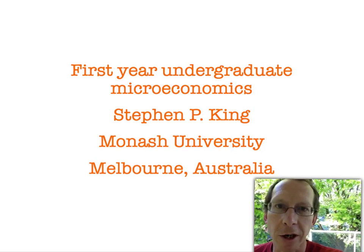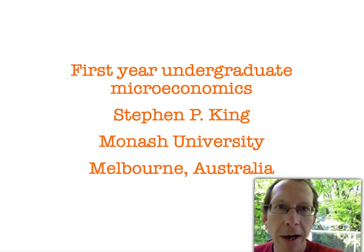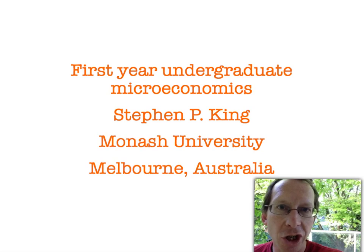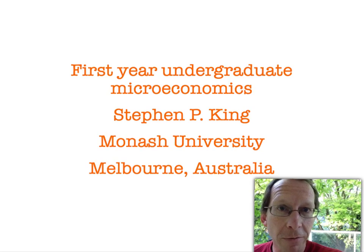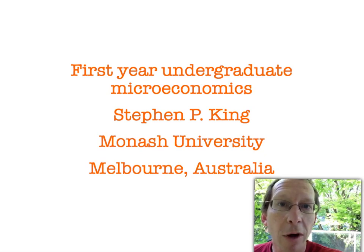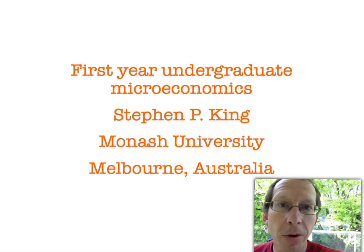Hi, and welcome back to First Year Microeconomics. In our last presentation, we introduced the concept of elasticity and provided a range of different measures of elasticity. In this presentation, we're going to look at an application of elasticity. The application is going to be quite simple: suppose that the government sets a fixed higher price for wool farmers, as they did in Australia in the 1980s and 90s. Is that going to make farmers better off or worse off? Let's see how.